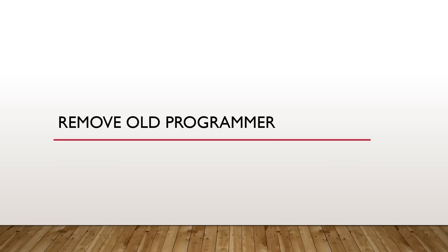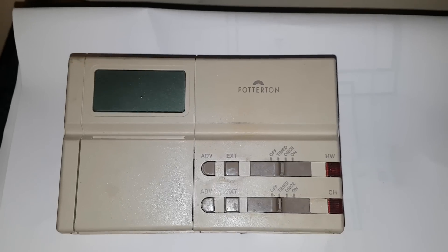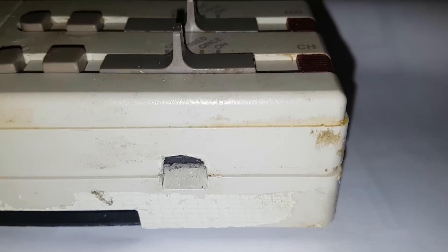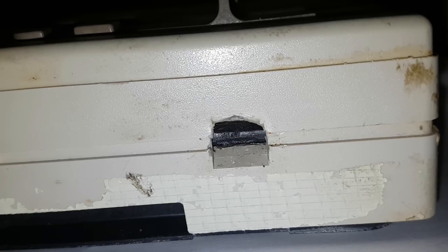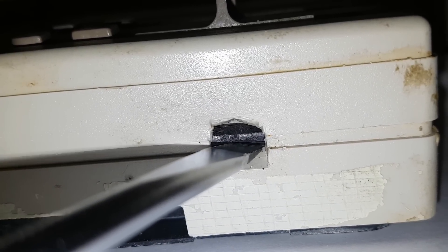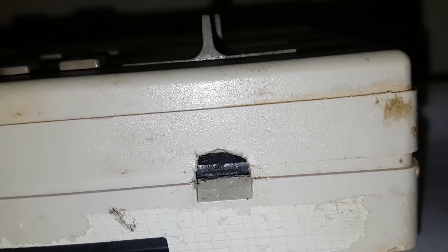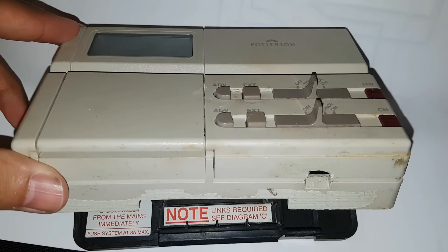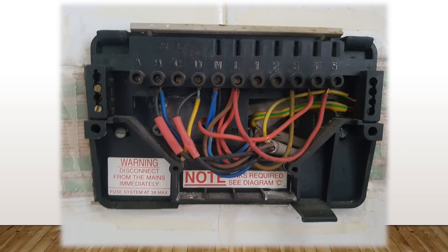So how do we remove the old programmer? This is what my old programmer looks like. There should be a tab somewhere — mine's on the bottom, yours might be on the left or right. Push that tab in as much as you can and then lift it. You'll see the wall plate where all the wires are going. This is what my wall plate looks like with all its terminals. It looks a bit daunting but I'll explain exactly what's going on. The timer we took off has a diagram on it which we need to have a look at.